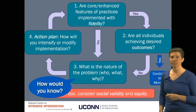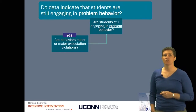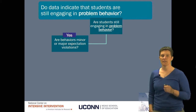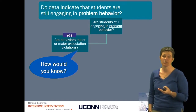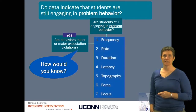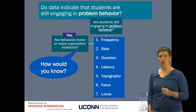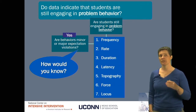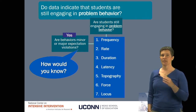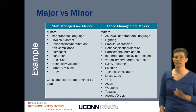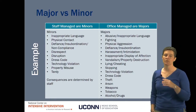We're now looking at how we would know what the nature of the problem is. Recall this flowchart where we're thinking about students who are still engaging in a problem behavior. Are the behaviors minor violations or major? To know that, we think about the dimensions of behavior: is the frequency so high or low that it becomes a problem? Is the duration something that tips it into problem behavior? Is the force or locus of a behavior the thing that makes it a problem behavior?